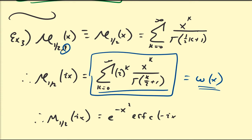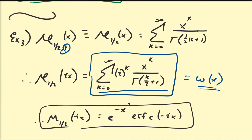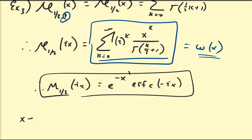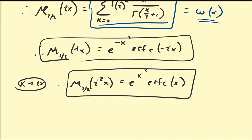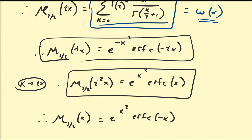Now replace x with ix again. Then E_{1/2}(i·ix) = E_{1/2}(-x²) becomes e^{-(ix)²} · erfc(-i(ix)) = e^{x²} · erfc(x). Since i² = -1, we get that E_{1/2}(-x²) = e^{x²} · erfc(x), and therefore E_{1/2}(x) = e^{x²} · erfc(-x).